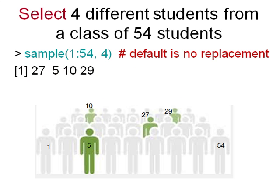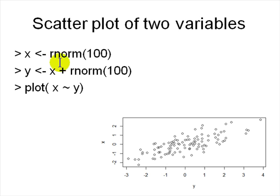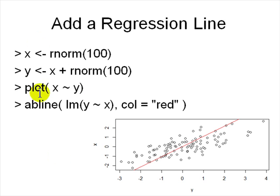Let's look at a plotting example. x is 100 random normal numbers, and y is x plus some additional normal numbers — so x and y are clearly correlated. Type 'plot(x ~ y)' to get a scatter plot, because x and y are vectors represented as points. You can add a regression line using 'abline(lm(y ~ x), col="red")' — linear regression of y on x — and you get a red regression line.